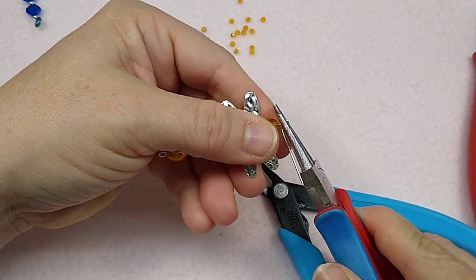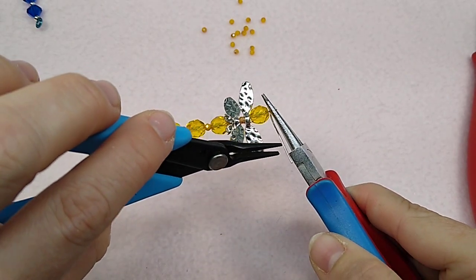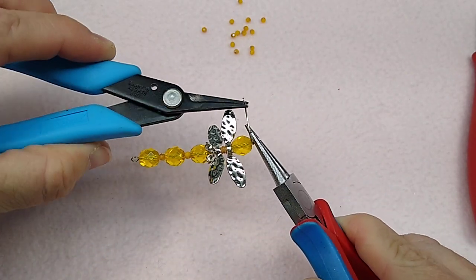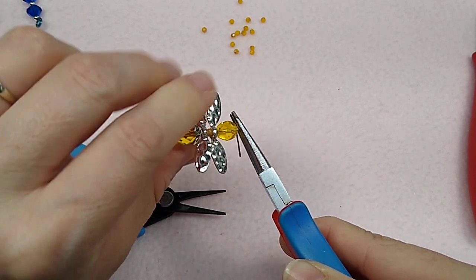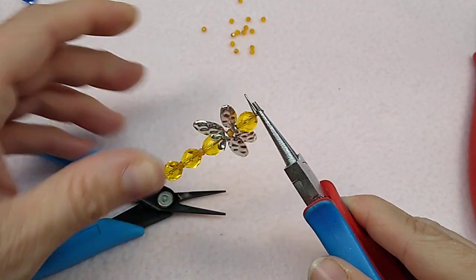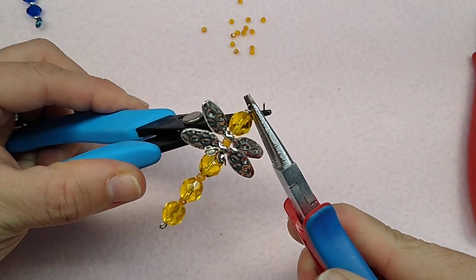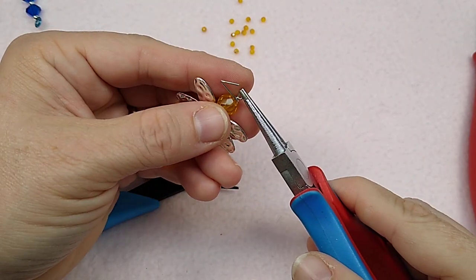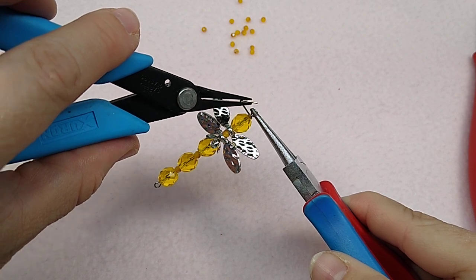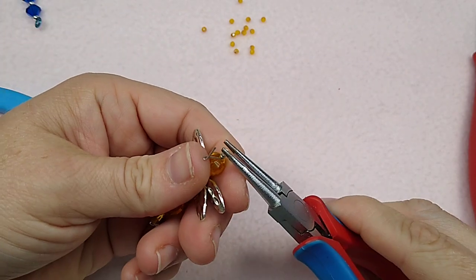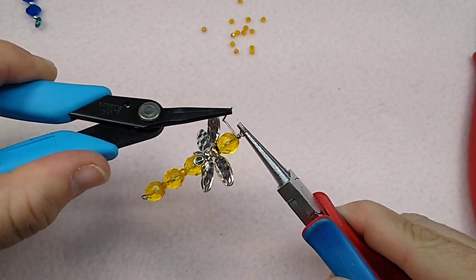I grab it with my round nose pliers. And I do my very best to make a neat wrap and do it tight down to the bead. This is another way to use up like single bead caps that you have that I have a little container that's got singles in it and there's no mates to them. So this is a good way to use those.